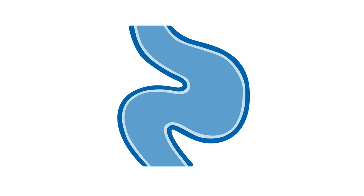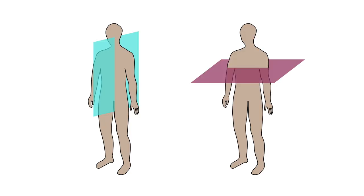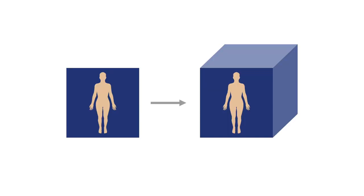Varicose veins are often dilated and tortuous. In ultrasound, this is an easy, important way to distinguish varices from the GSV and SSV, because tortuous varicose veins often travel through both longitudinal and transverse planes and display as a cluster of lines and/or black circles. This is because their twisty path is not being viewed from both planes at the same time — that would require 3D imaging capabilities, which are up and coming.